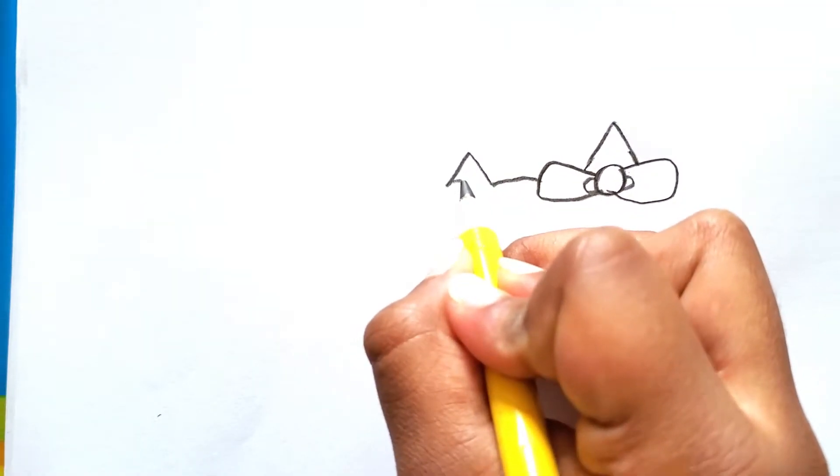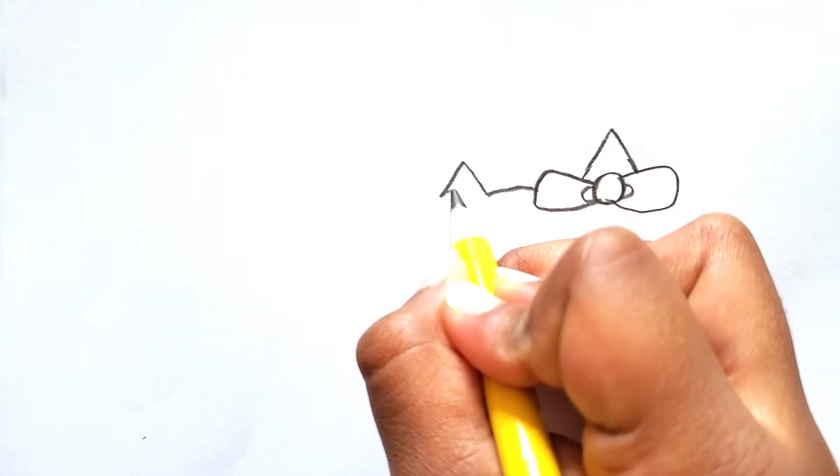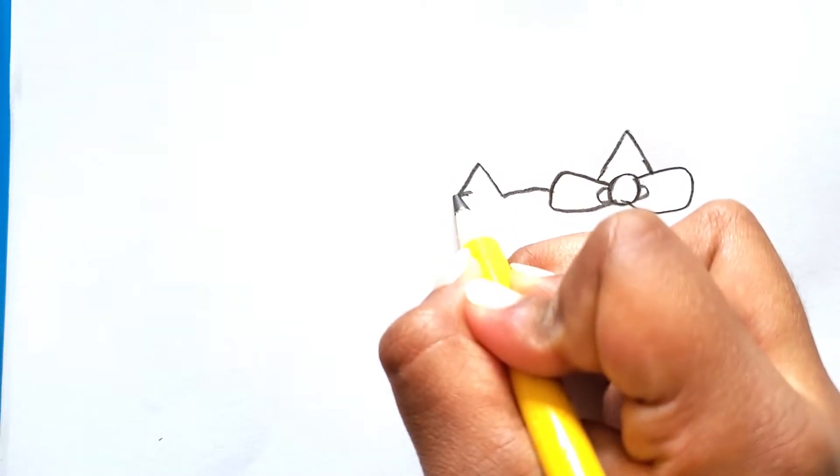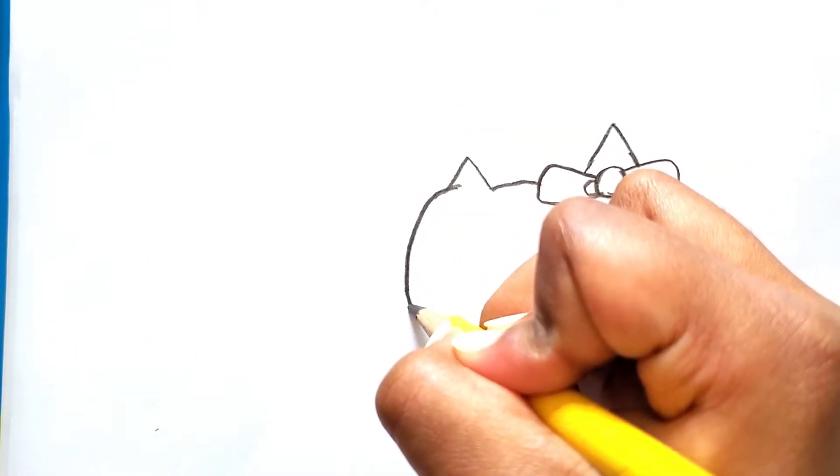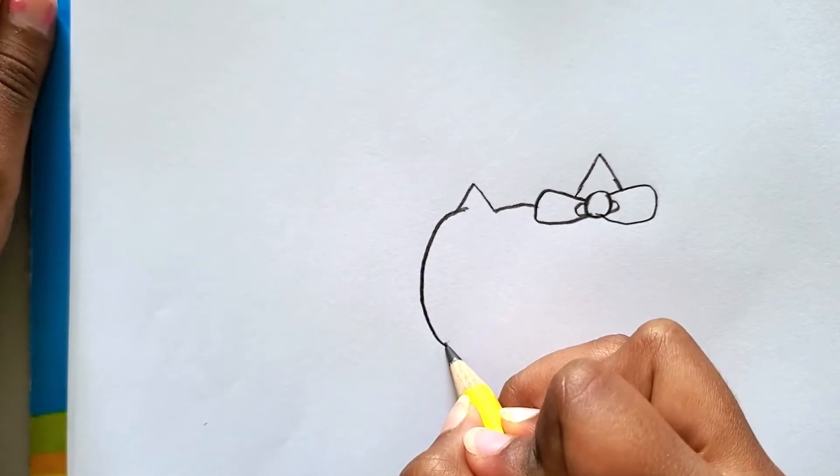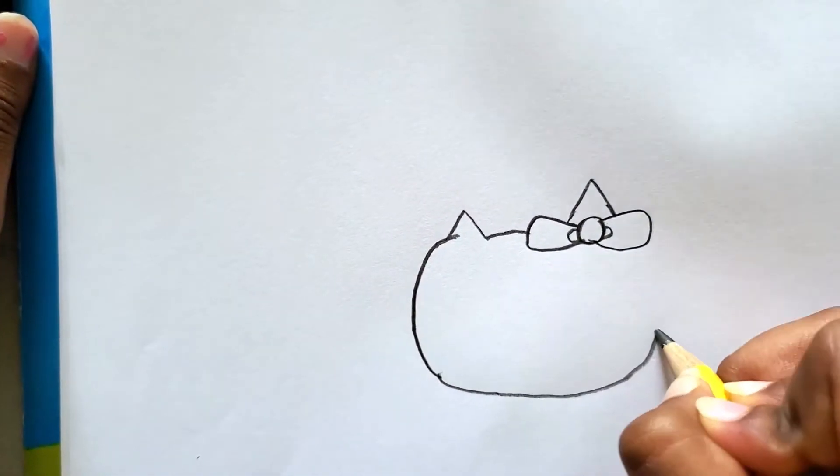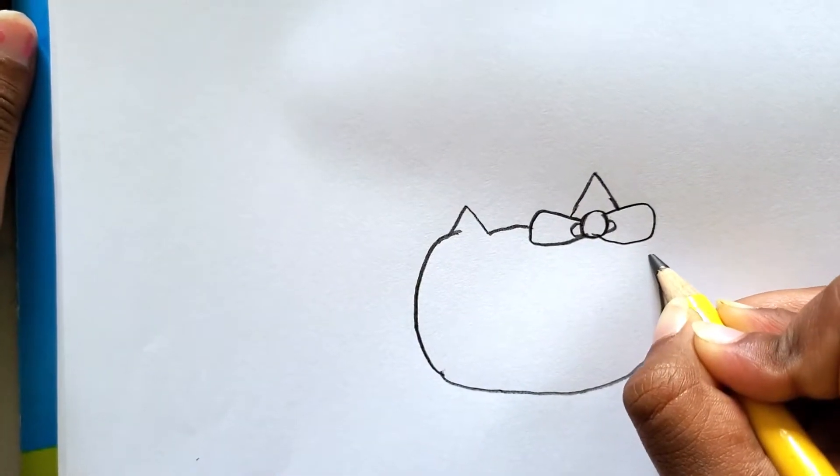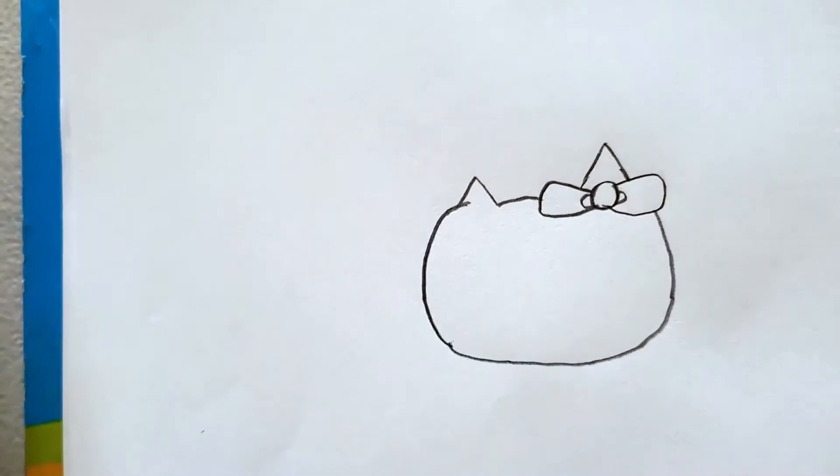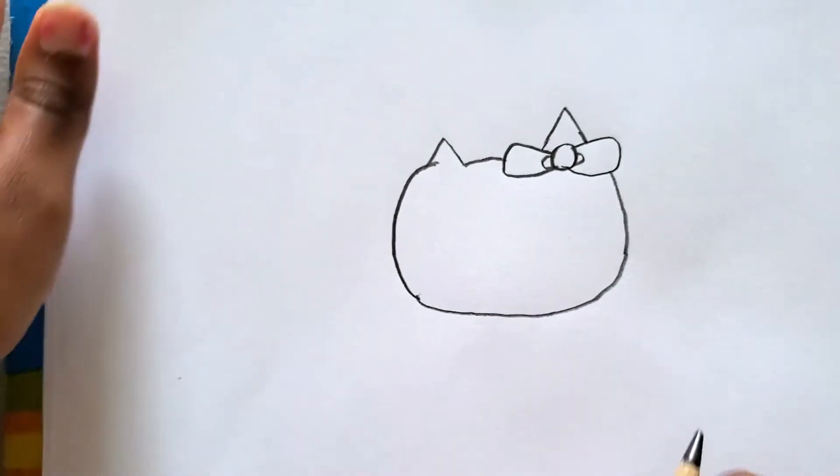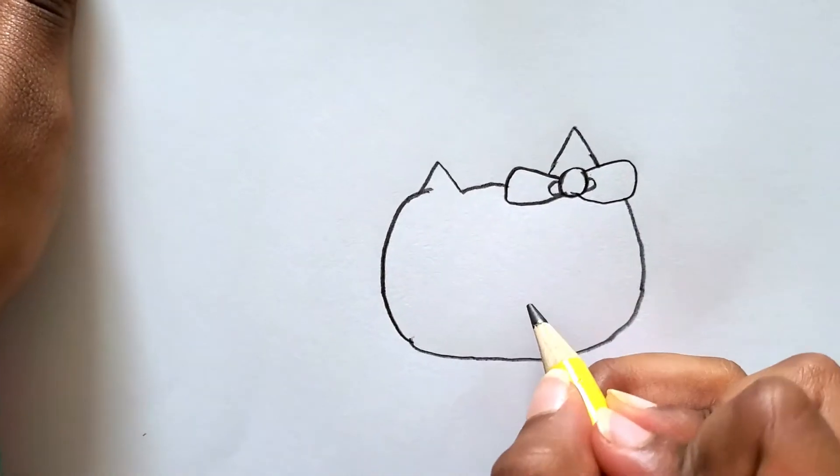And you can see there's a little part of that inside. This is going to be her face, kind of like a circle but it's half a circle. Now let's finish her face.